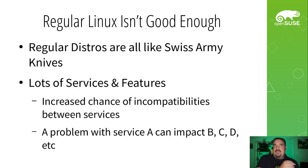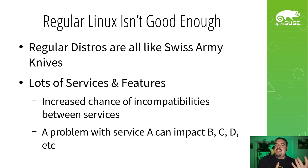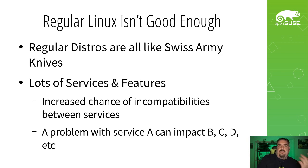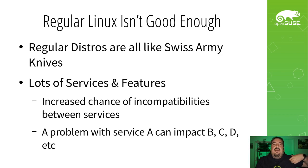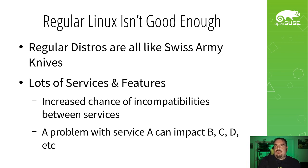So regular Linux is not good enough. To paint everything in broad strokes, regular Linux distributions are all like Swiss Army knives — that's how we've built them and why we built them. You've got tons of different components which can all be swapped out interchangeably; it's not focused to do any one particular thing. While these lots of services and features are great, just like Swiss Army knives can do everything, it doesn't mean they do one thing perfectly. You end up with an increased chance of incompatibilities between services — the pain distributions deal with when building. In production, a problem with service A can easily impact services B, C, D, et cetera. Cascading failures are a real risk with traditional Linux used in traditional ways.